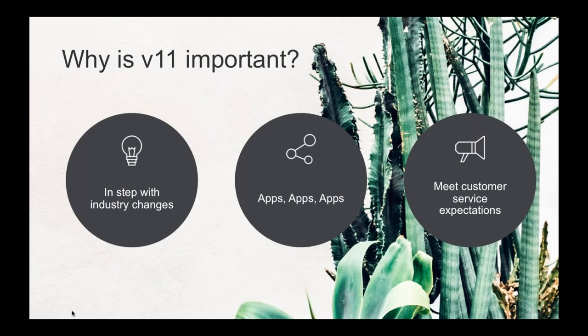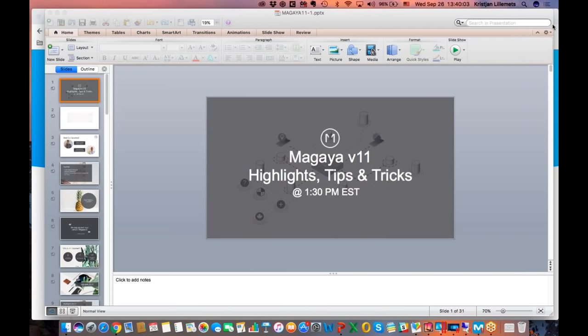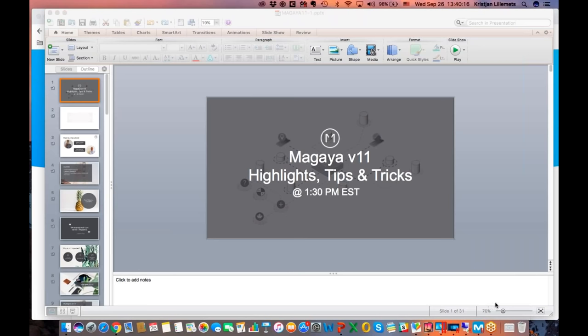A few highlights: everything happens on the phone — you know it, you do it. We're going to show you two specific app-related add-ons for version 11. One is going to be LiveTrack, and the other is going to be the Binder app. It's amazing to see the opportunities this will allow — doing the same work a lot faster and a lot more efficiently. We also have a brand new LiveTrack built from the ground up with new technology to give your clients live tracking capability.